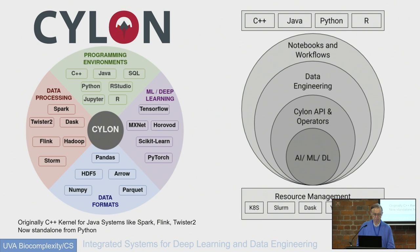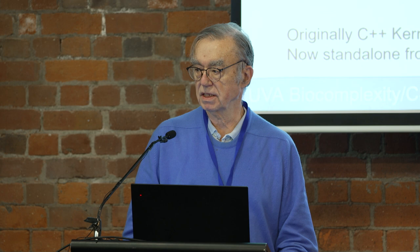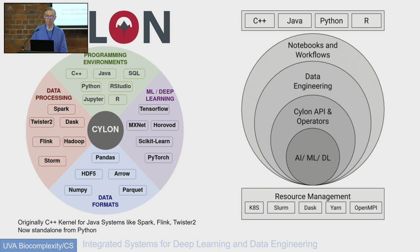I'll briefly mention Cylon, which is a project we originally started when we realized that systems like Spark were really not very high performance — one of the problems is it's written in Java. So we wrote Cylon as a C++ kernel. It had one key technical idea: to use Apache Arrow. Apache Arrow is an open source technology related to Apache Parquet, which does in-memory or disk-based high performance arrays and vectorization.